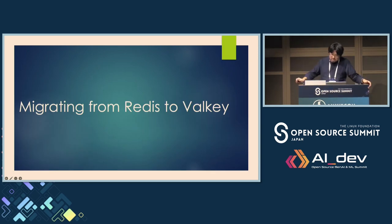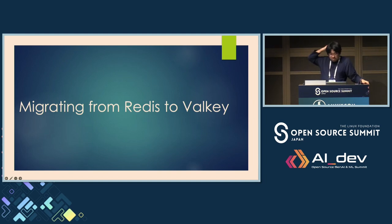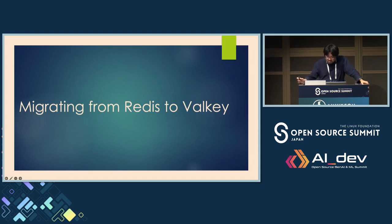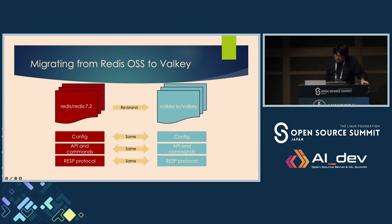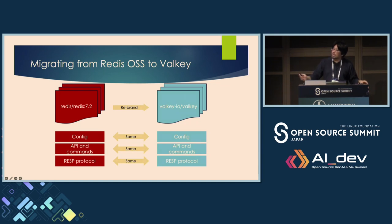Now let's talk about one of the most practical considerations for many users: how to migrate from Redis to Valkey. Migration can often be a complex and risky process, but we have put significant effort into making this transition as smooth as possible. Since Valkey is based on the same source — it was forked from Redis OSS 7.2 — we maintain perfect compatibility across all key components including configurations, APIs, commands, sub-command protocols, and client libraries, which are exactly the same.